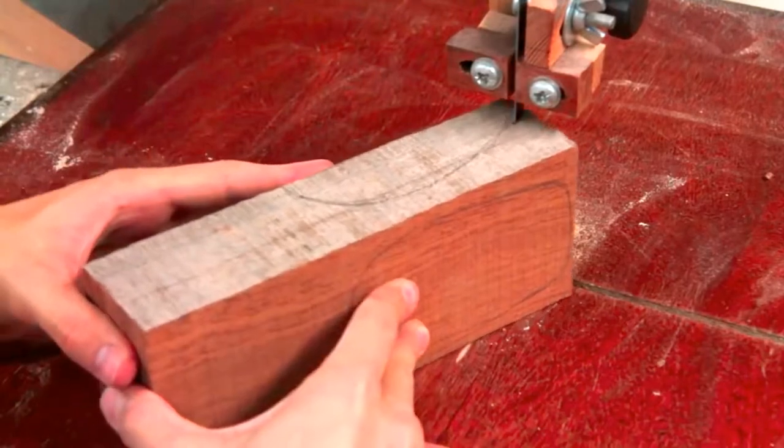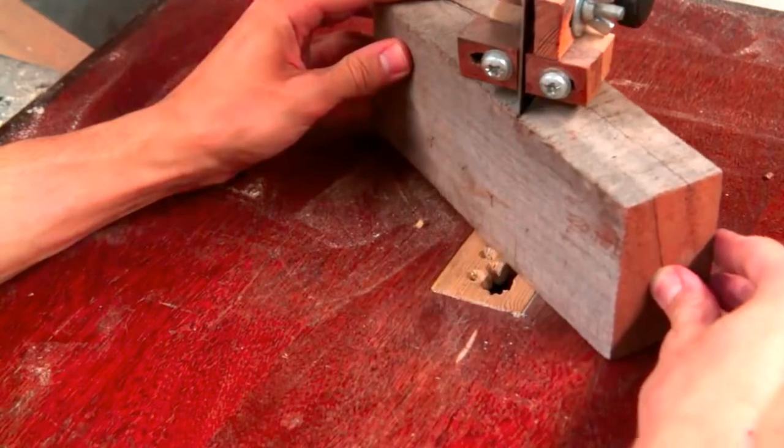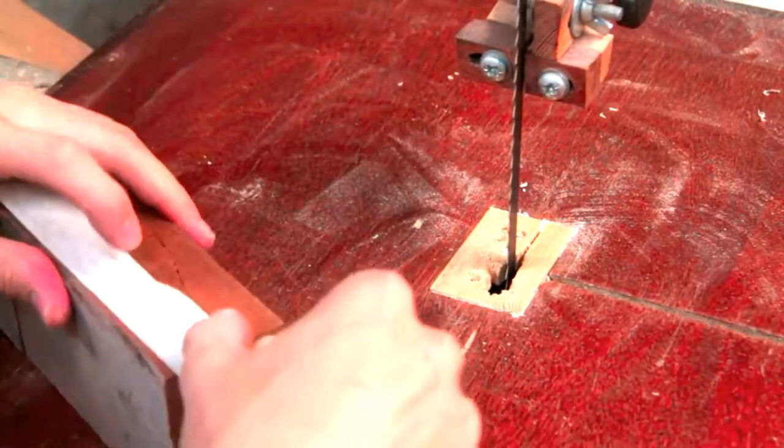And now I'll cut out to those lines on the bandsaw. I'm using some masking tape to hold together the pieces whilst I make the second cut.